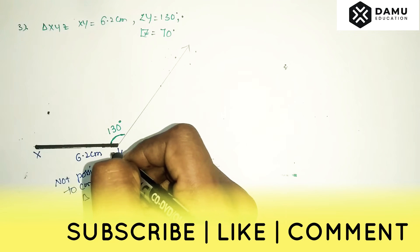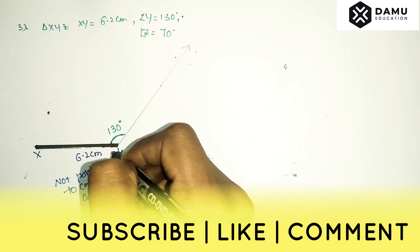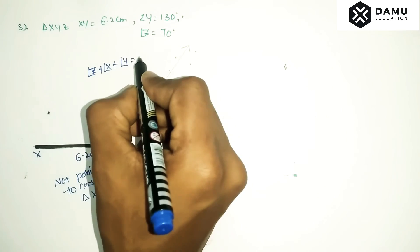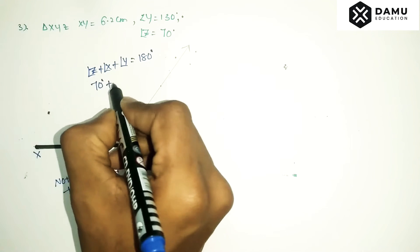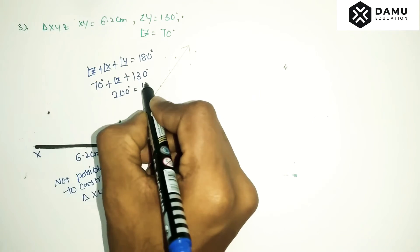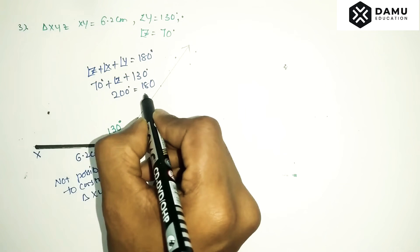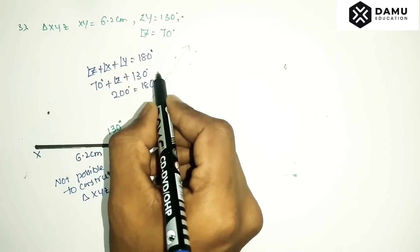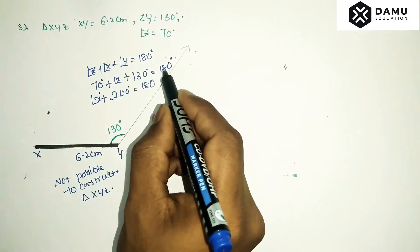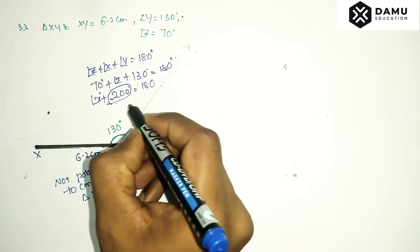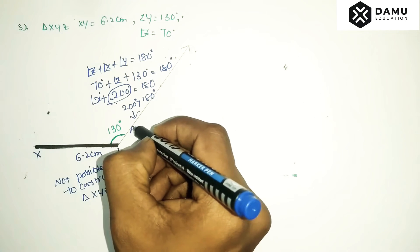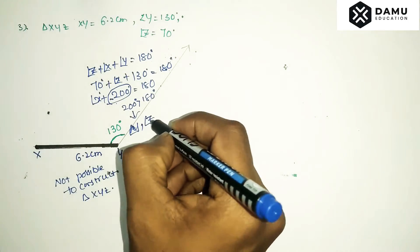We can calculate using the angle sum: angle Z plus angle X plus angle Y equals 180 degrees. Angle Z is 70 degrees, and angle Y is 130 degrees, so 70 plus 130 gives 200 degrees. The sum of all angles should be 180 only, but we are getting 200, which is more than 180. Therefore, we cannot construct a triangle with these given angles — the given angles are not possible.